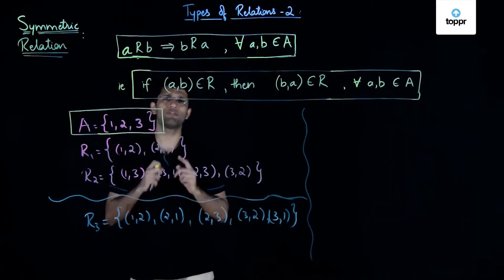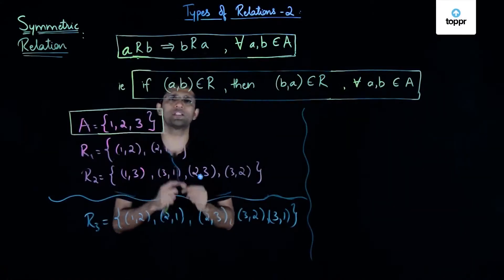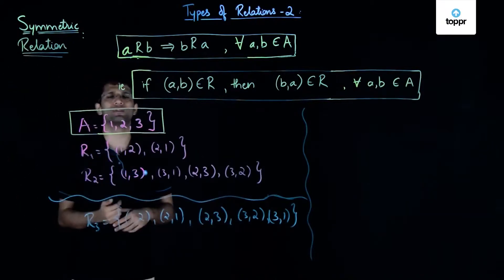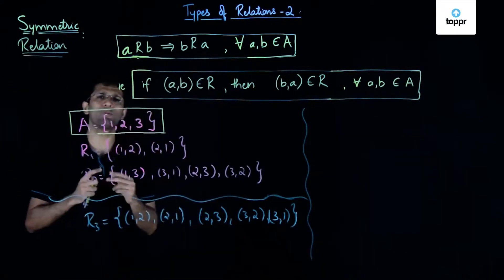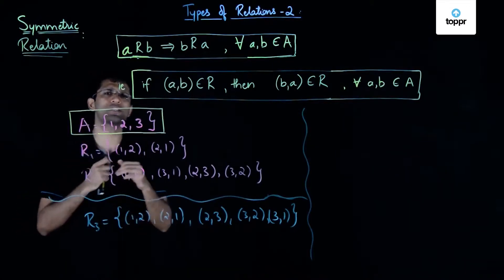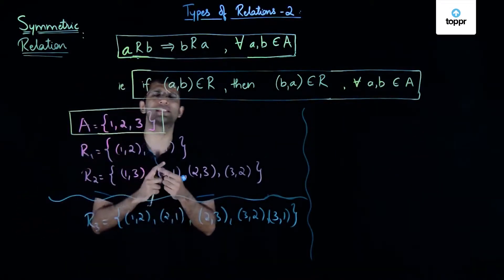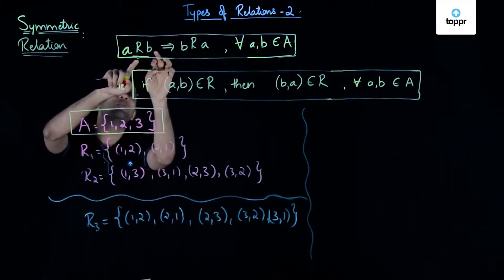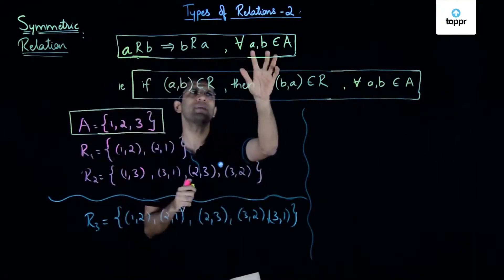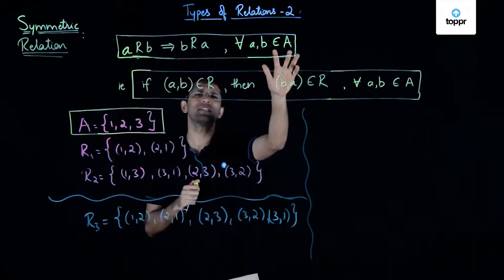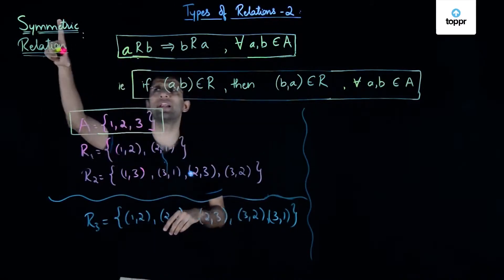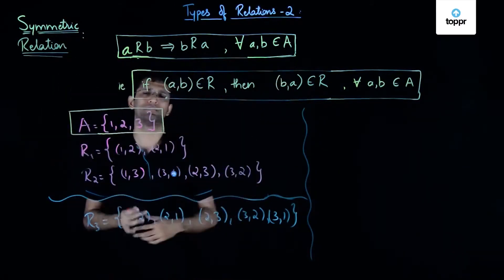Continuing our study of types of relations, the next type we will see is a symmetric relation. The condition for a relation to be symmetric is that if A is related to B, then B is related to A, for all A and B elements of a set A. When this holds, we say that relation R is a symmetric relation on the set A.